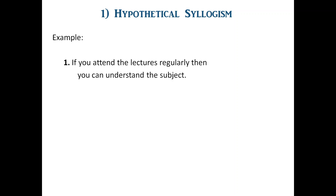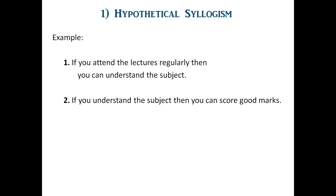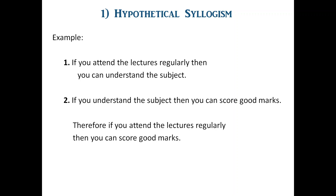Let us take an example. The first premise is: if you attend the lectures regularly, then you can understand the subject. Second: if you understand the subject, then you can score good marks. Here, the consequent of the first — 'you can understand the subject' — is the same as the antecedent of the second. From this we get a hypothetical conclusion: if you attend the lectures regularly, then you can score good marks.